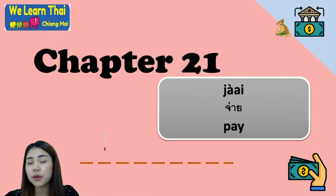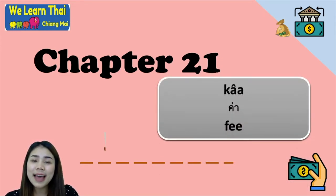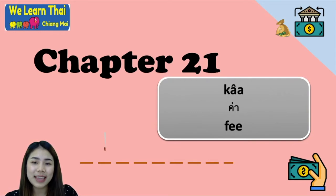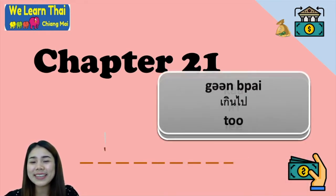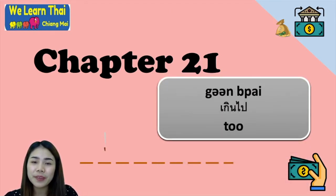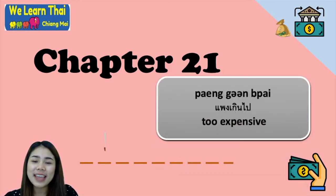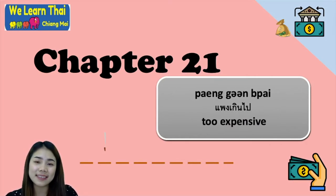We will also learn about the word ค่า which means fee. You can say ค่าน้ำ for water bill or ค่าไฟ for electric bill. You will also learn about the word เกินไป, which means too. For example, แพงเกินไป means too expensive. You can use เกินไป with any adjective when you think something is too much.